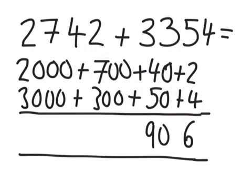700 and 300 is 1,000, and 2,000 and 3,000 is 5,000.